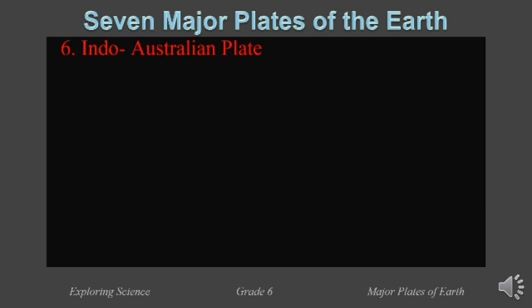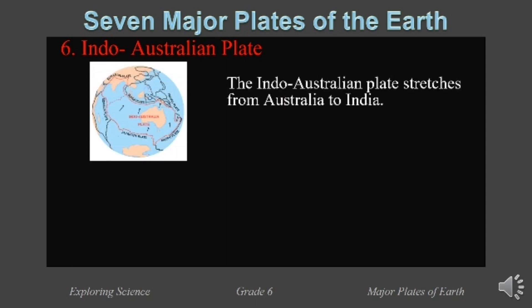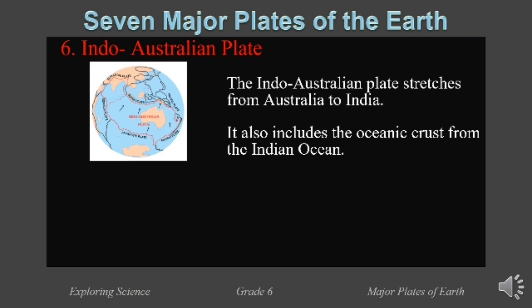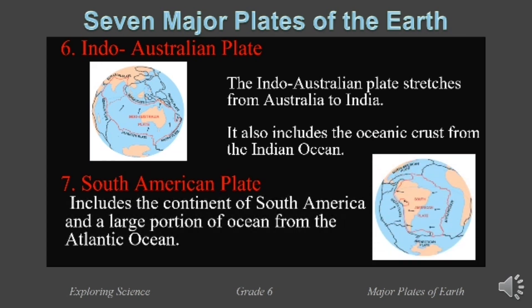Sixth, it is the Indo-Australian plate. The Indo-Australian plate stretches from Australia to India. It also includes the oceanic crust from the Indian Ocean. And the last — it is the South American plate. The South American plate includes the continent of South America and a large portion of the ocean from the Atlantic Ocean.